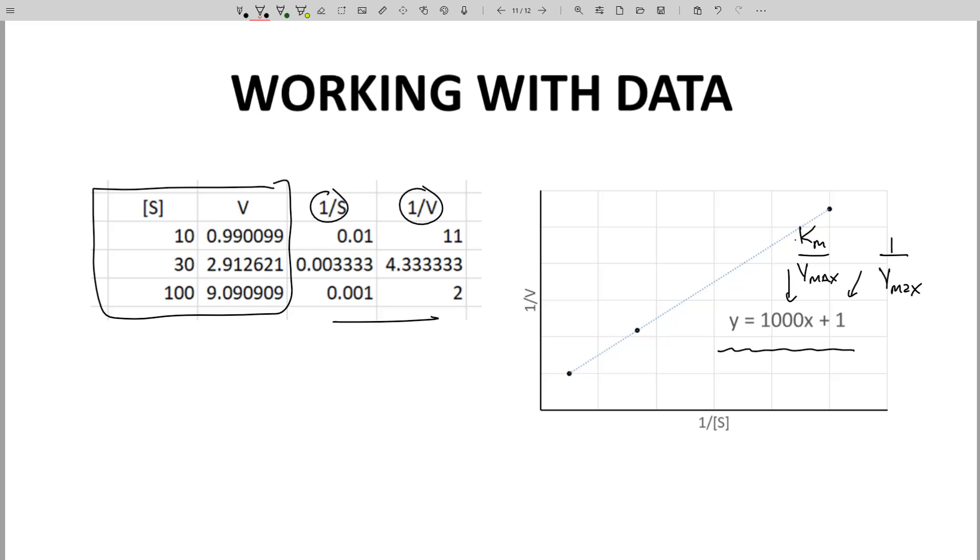If you skipped making a graph, you can always use the built-in slope and intercept functions on your 1 over V, 1 over S data point pairs.